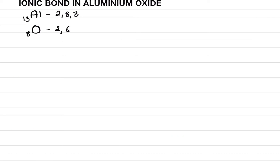Let's see how they form an ionic bond. Remember, an ionic bond is an electrostatic attraction between two ions, and there is transfer of electrons. Let's show the diagram. First, write aluminium — it has three electrons in its valence shell, so we put one, two, three.